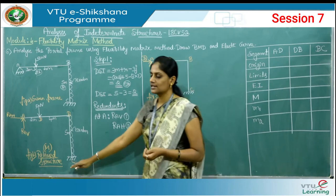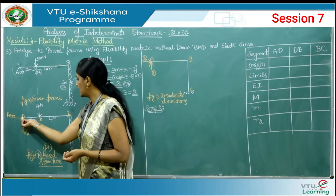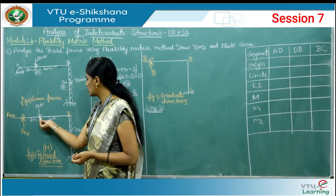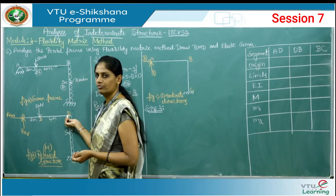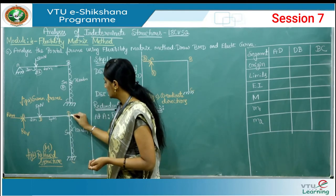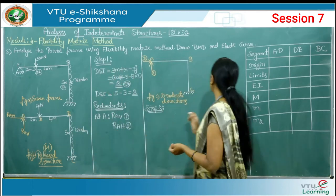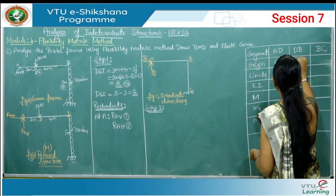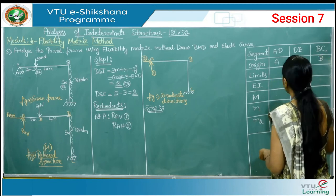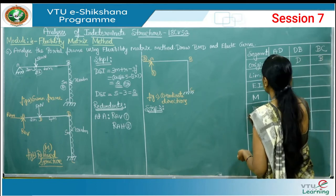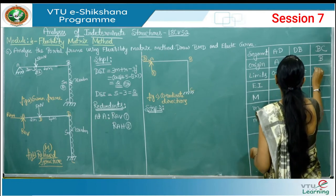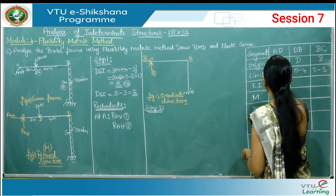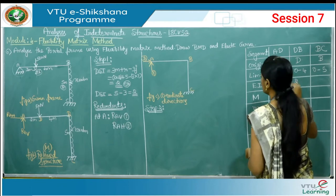With A as origin for span AD, limits are 0 to 2. With D as origin for span DB, limits are 0 to 4. With B as origin for span BC, limits are 0 to 5. The EI value is 2EI for segments AD and DB, and EI for segment BC.